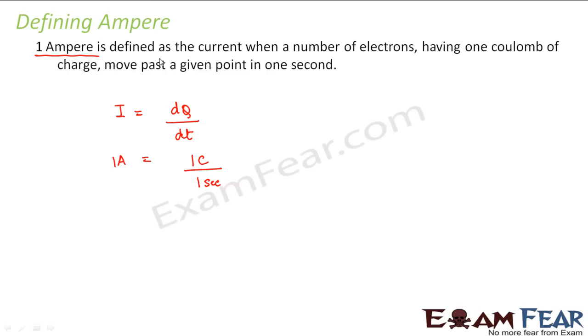1 ampere is defined as the current when a number of electrons having 1 coulomb of charge move past a given point in 1 second. Let us suppose I am considering this point A into consideration. When some n number of electrons having charge 1 coulomb will pass in 1 second, then we define that current as 1 ampere. So 1 ampere is the current when a number of electrons having 1 coulomb of charge move past a point in 1 second.